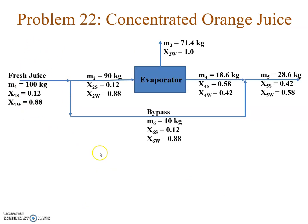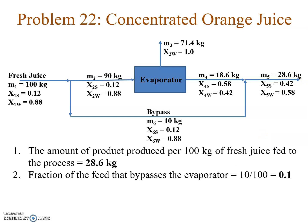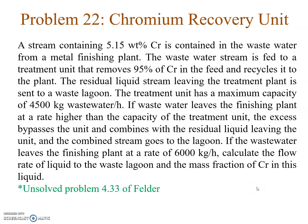So the balanced flowchart shows: 100 kg of fresh juice coming in, 90 kg goes to the evaporator, and 10 kg is bypassed. After evaporation I am left with 18.6 kg of concentrated juice, which I mix with the 10 kg of fresh juice bypass to get 28.6 kg of final product. The fraction of the feed that bypasses the evaporator is 10/100 = 0.1.